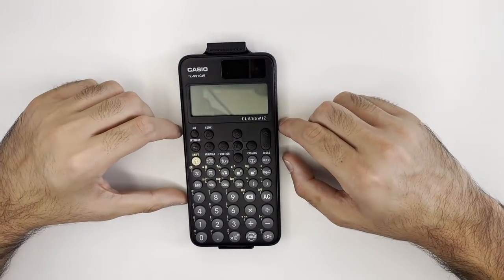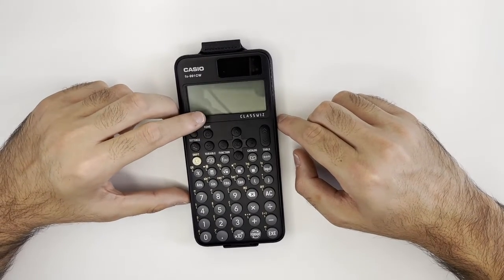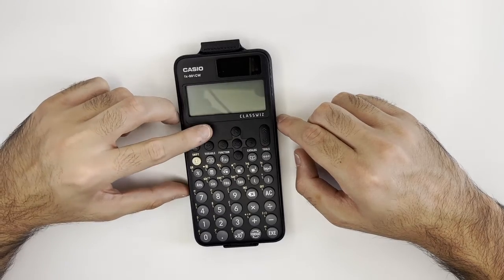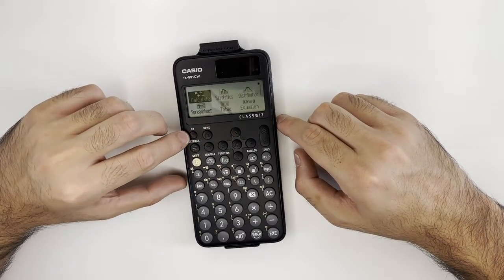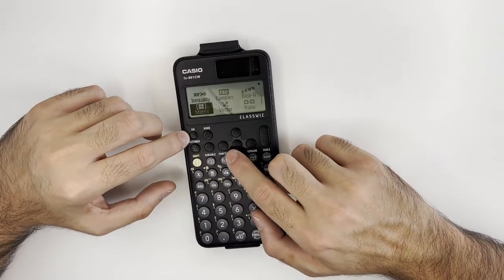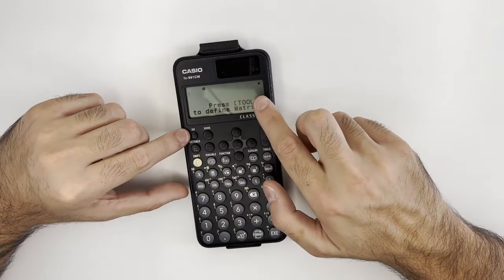Hello everyone, in today's video we're going to show you the matrix option or function on the FX 991 CW. To start with, after turning the calculator on, we navigate to the matrix option and press OK. As it says, we press Tools to define the matrix.